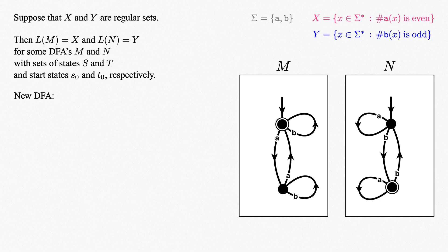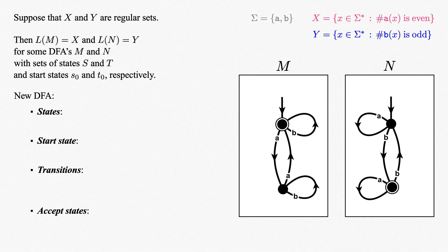What we see in front of us shows us exactly how to do that if we go back to our definition of what a DFA consists of. What we need are a finite number of states with one start state, transitions from each state for each symbol of our alphabet sigma, and some subset of the states marked as accept states. To help us refer to these DFAs, let's label their states. m will have states 0 and 1, and n will have states a and b.